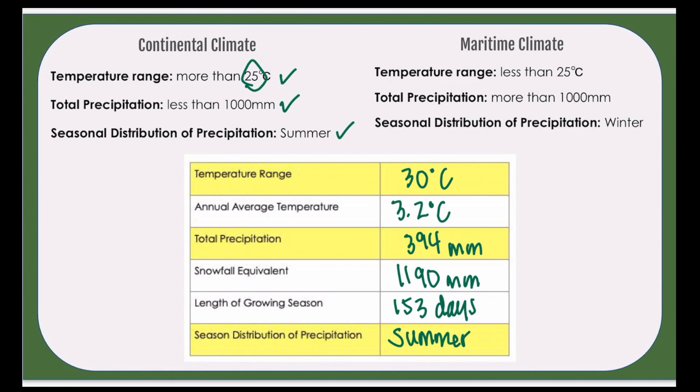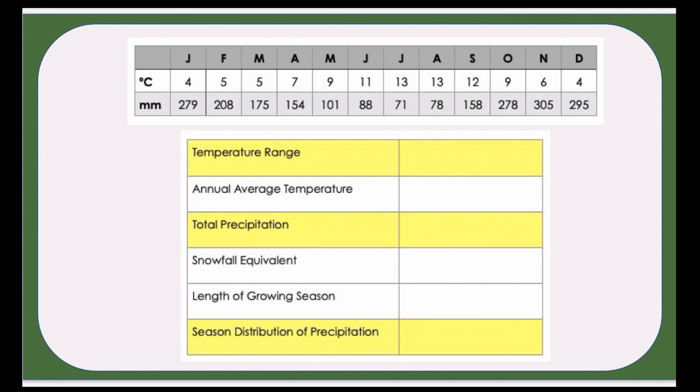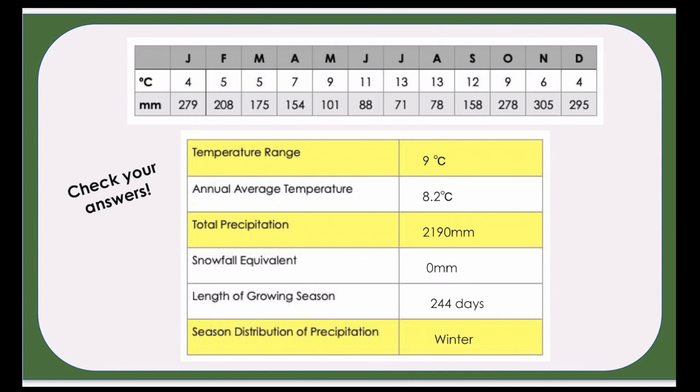If you do find that it's spot on, just look to your other two to get your answer. If you're looking for extra practice, on the screen you will see another location. Go ahead and see if you can calculate the temperature range, the annual average temperature, total precipitation, the snowfall equivalent, the length of growing season, and the seasonal distribution of precipitation. Here are the answers — did you get them correct? If not, go back in the video and see how you calculated your answers and what ways you can improve for next time. Good luck.